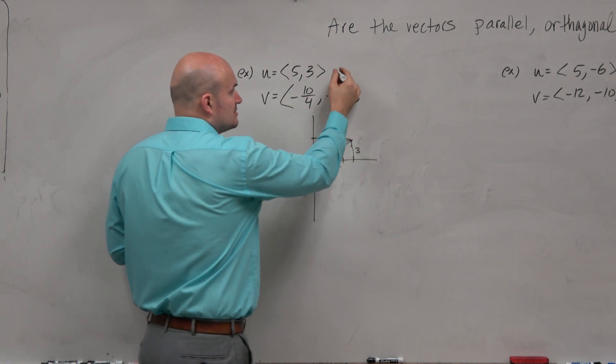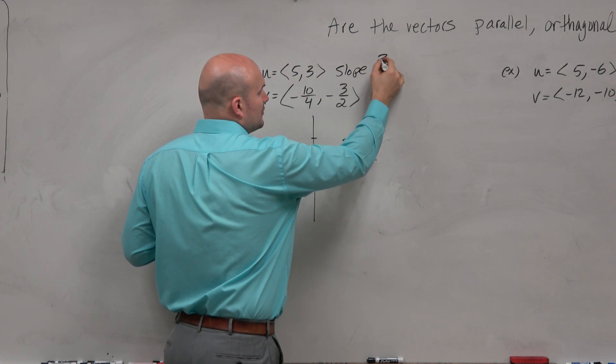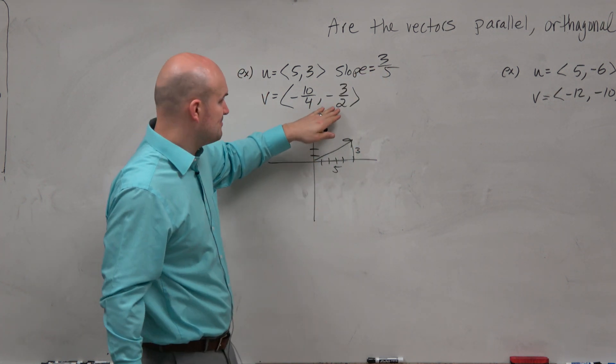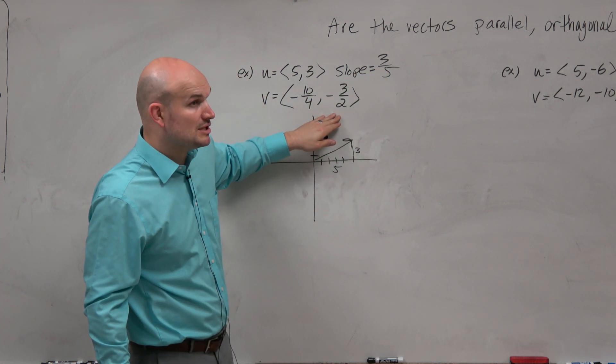What if it's 3, 5? Yeah. Slope is 3 over 5. Now, if this vector is parallel to it, it has to have the same slope. Correct?